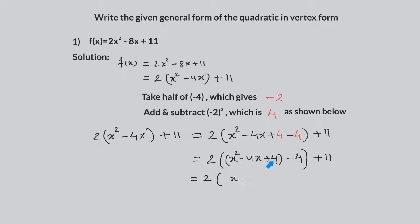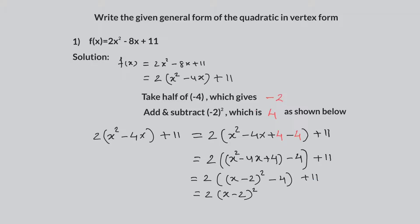Now, rewriting the first three terms as a perfect square trinomial, we have 2 times parentheses x minus 2 squared minus 4, close parentheses, plus 11. By distributing the multiplication with 2, we have 2 times x minus 2 squared minus 8 plus 11.